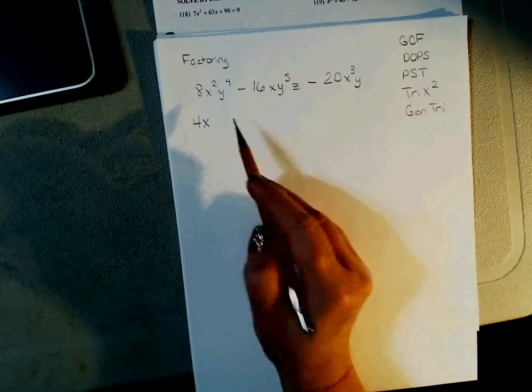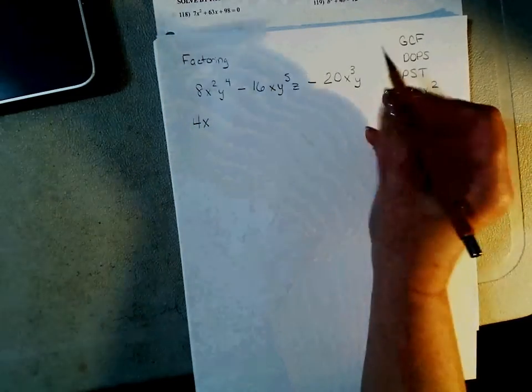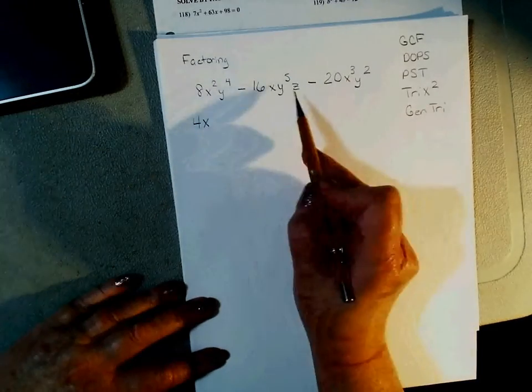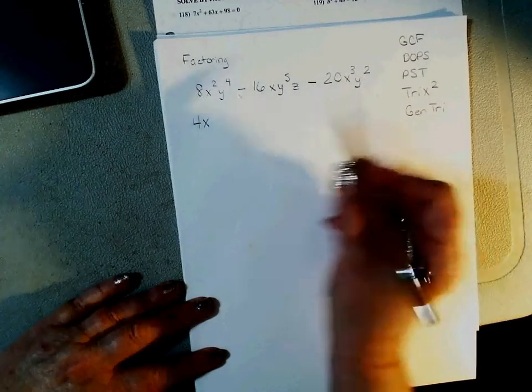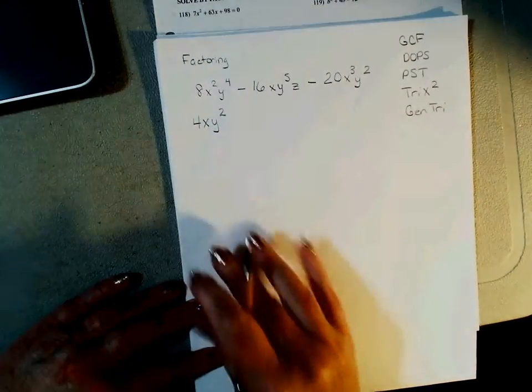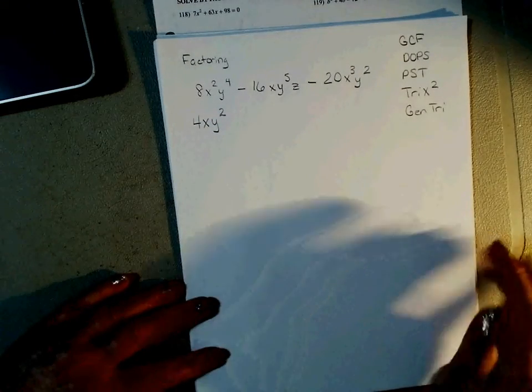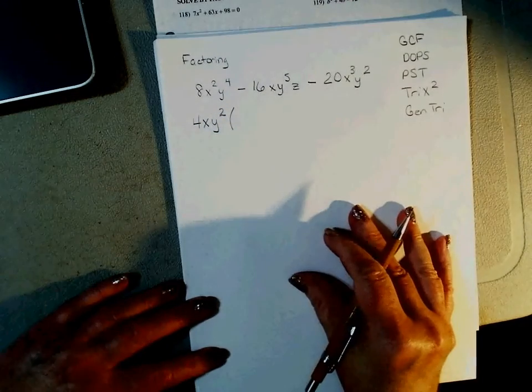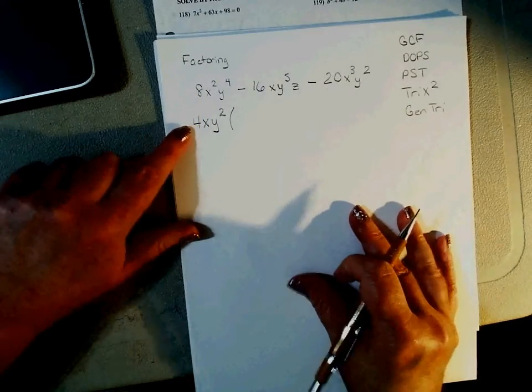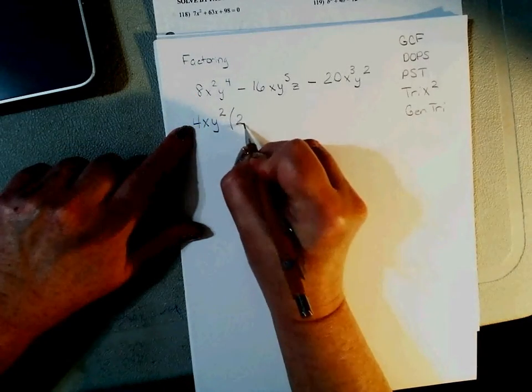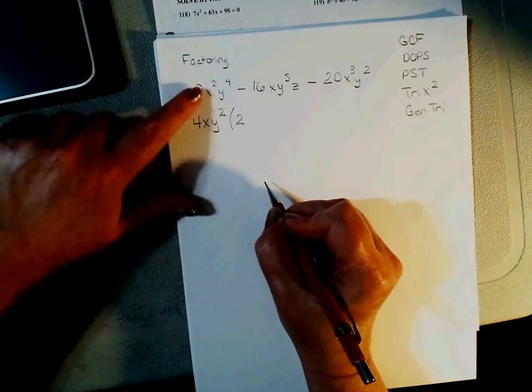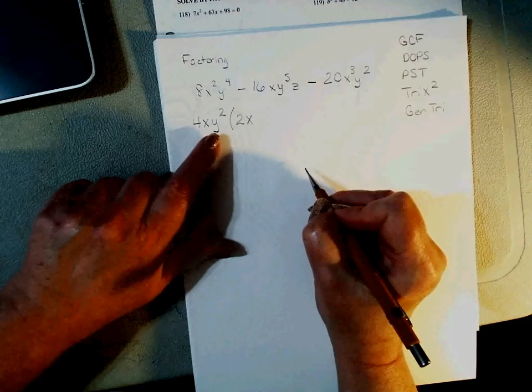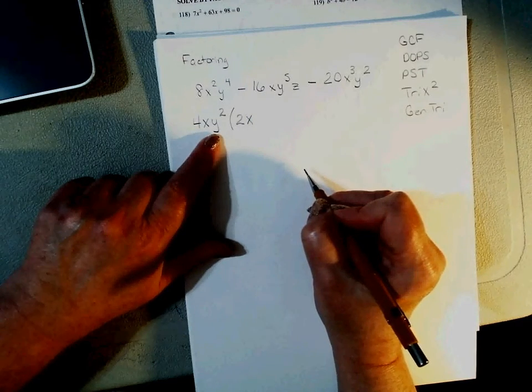Y to the 4th, y to the 5th, I'm going to make that y squared just so we can mix it up a little bit. Y to the 4th, y to the 5th, y squared. They all have at least two y's. And then the z. This is the only one that has a z so it can't be a GCF. So, we write a parenthesis. If we have an 8 and we pull out a 4, 8 divided by 4 leaves me with a 2. If we have x squared and pull out an x, we are left with an x. If we have y to the 4th and pull out y squared, we are left with y squared.